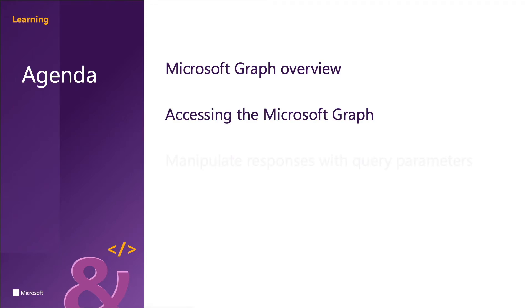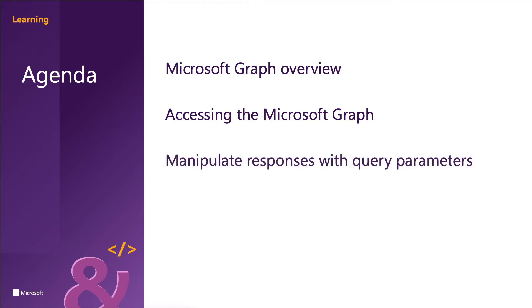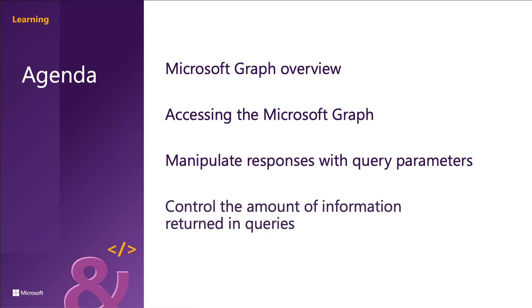Microsoft Graph APIs implement many of the OData protocol's query parameters. Query parameters will help you achieve multiple tasks such as limiting the amount of data returned by requests to Microsoft Graph, controlling how many fields are returned for each record, how many records are returned, and also filtering or searching for desired information.